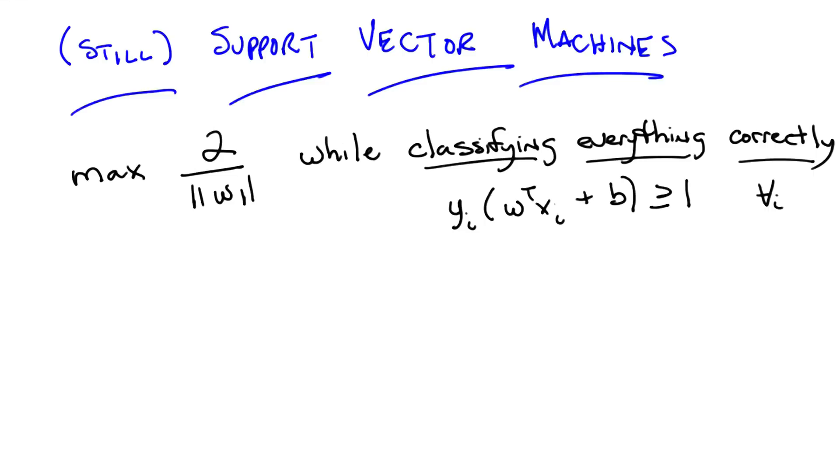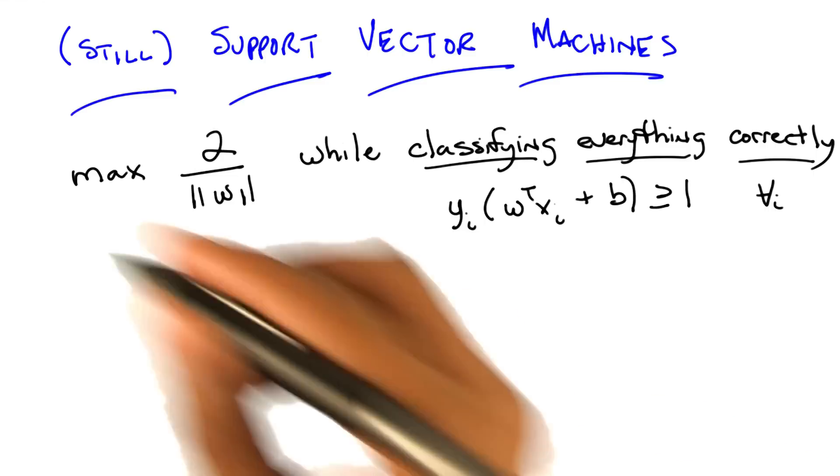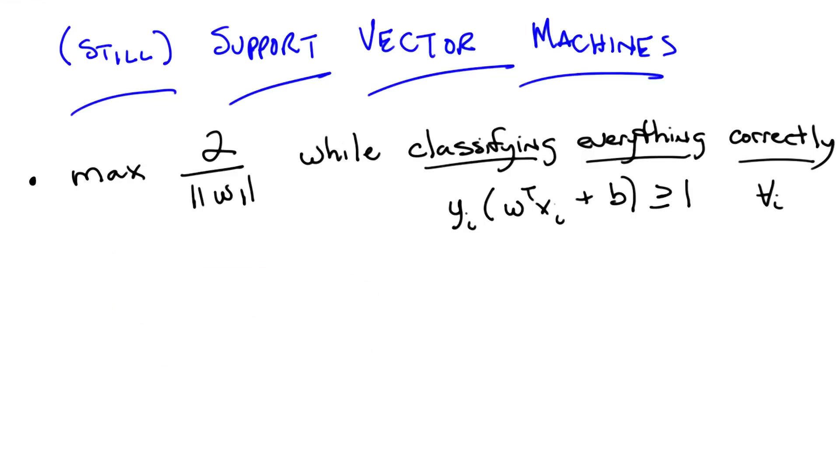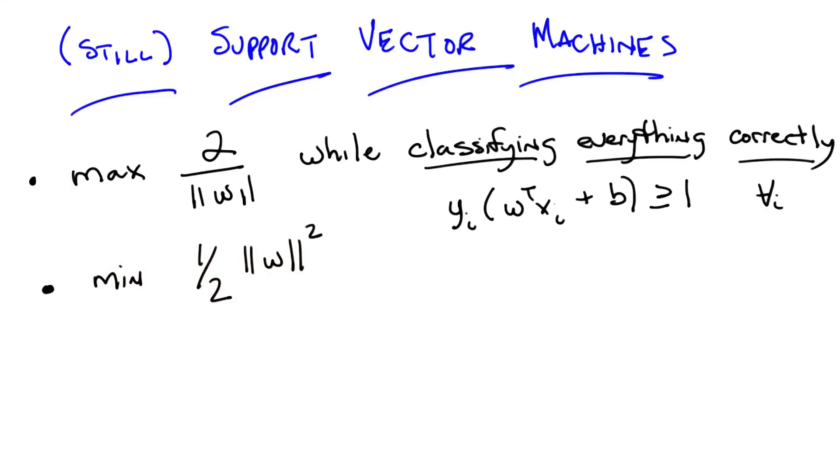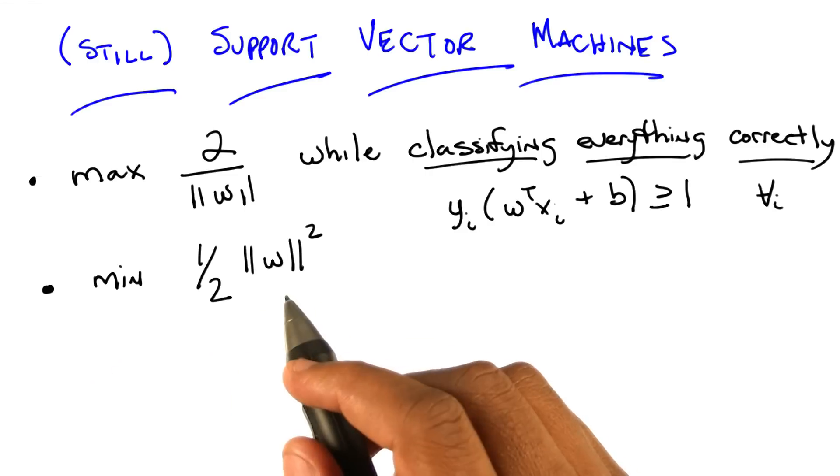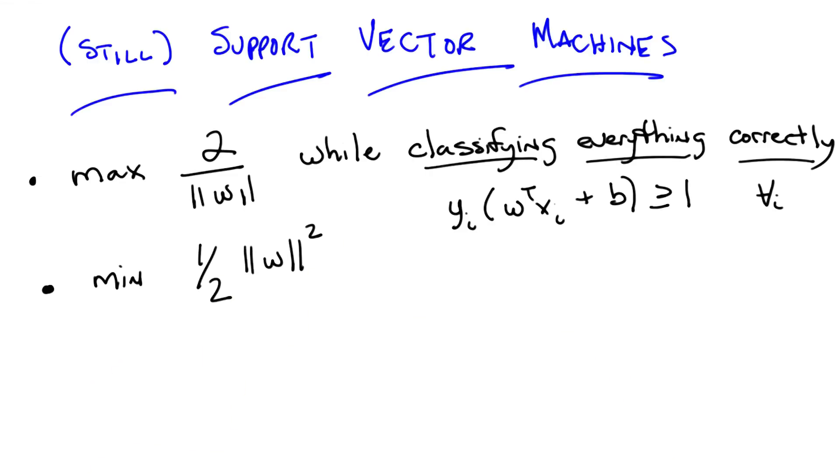So, it turns out that trying to solve this particular problem, maximizing 2 over w while satisfying that constraint, is a little painful to do, but that we can solve an equivalent problem which turns out to be much easier to do, and that is this problem. That is, rather than trying to maximize 2 over the length of w, we can instead try to minimize 1 half times w squared. Now, can you see that those will always have the same answer?